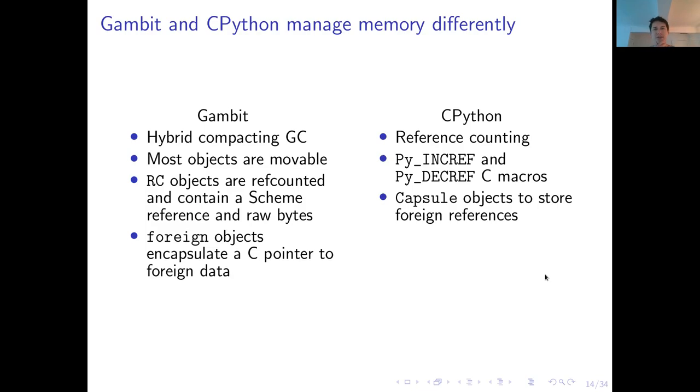Now, Gambit and CPython manage memory differently. Gambit uses a hybrid compacting GC and most of its objects are movable. However, there exist RC objects which are reference counted allocated on the C heap and they contain a reference to a Scheme object. The foreign objects which are created by Gambit Scheme, the Gambit Scheme FFI, just encapsulate a C pointer to foreign data. On the other hand, CPython uses reference counting exclusively and so we have to be very careful in the low-level implementation that we use proper Py_INCREF and Py_DECREF C macros in order not to have any leaking. And in the case of CPython, the equivalent of the Gambit foreign objects are CPython capsule objects which hold foreign references.